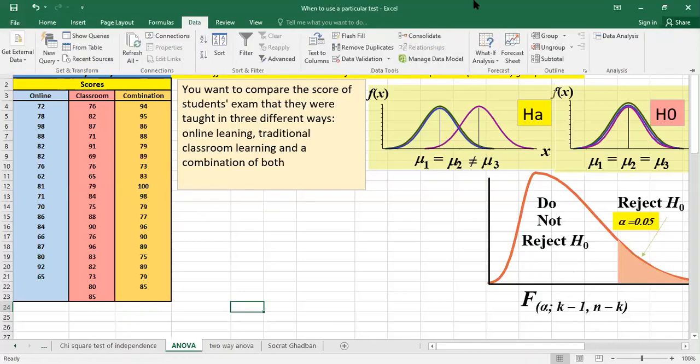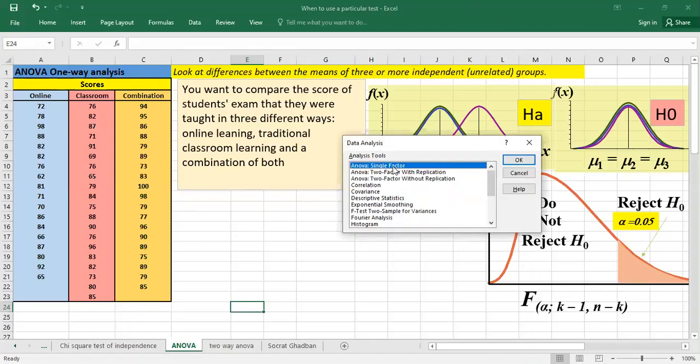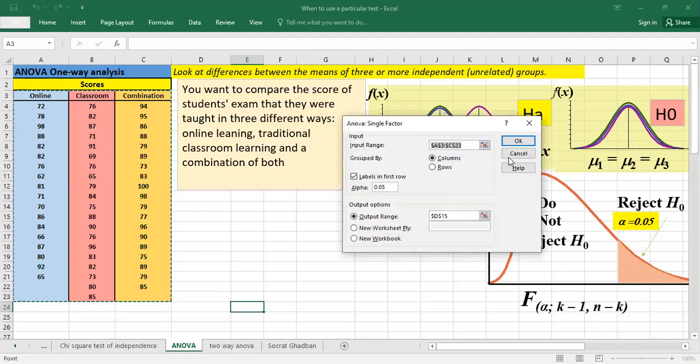We go here to data, click on data analysis and we select ANOVA single factor.